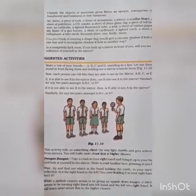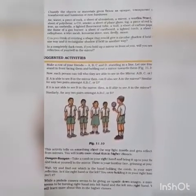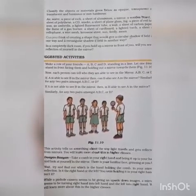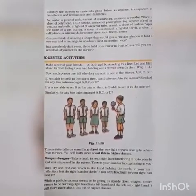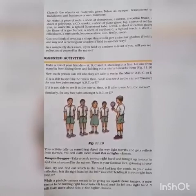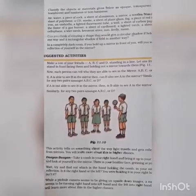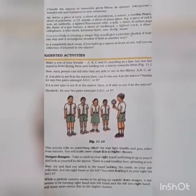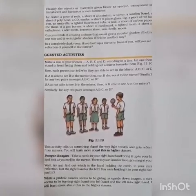You cannot see the object on the other side of an opaque object. For example, a piece of rock is opaque. You can see the object on the other side of a transparent object. For luminous objects, the object will emit light. For non-luminous objects, the object does not emit light.